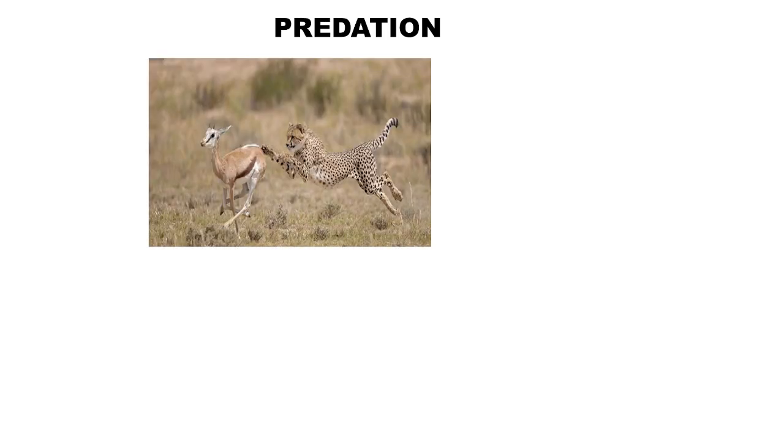Now let us talk more about predation. Predation is an interspecific interaction between two species, when an organism called the predator kills and consumes the other, called the prey. A very common example is a tiger attacking a deer and consuming it as food. Even as simple as a deer consuming grasses and green leaves — that is also predation.